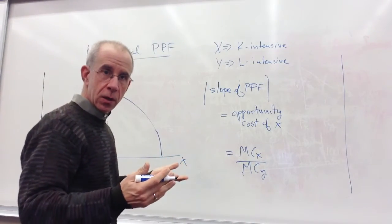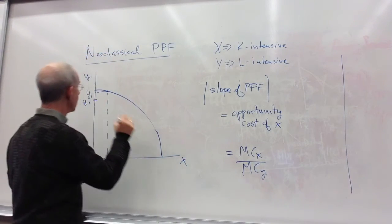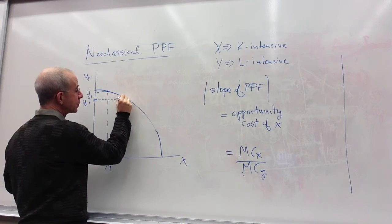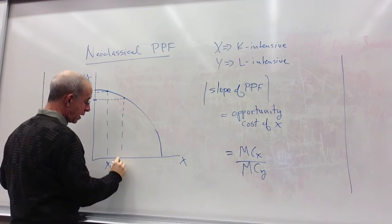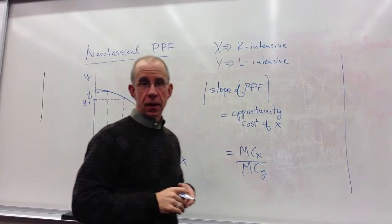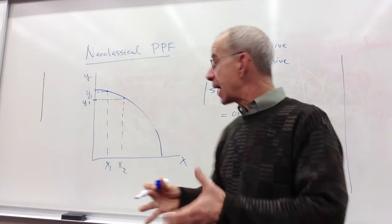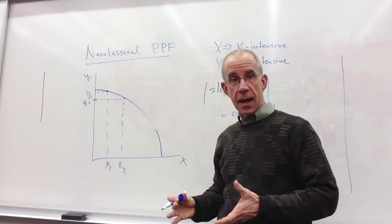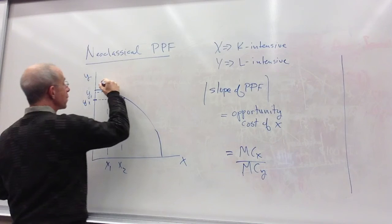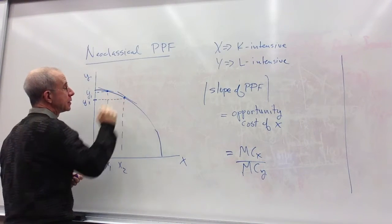And so labor and capital are both going to be going into the X industry. So you've got some trade-off that occurs. So we've got an increasing level of X production when we move resources, labor and capital, out of Y and into X. And we have this trade-off.